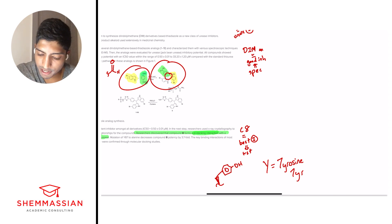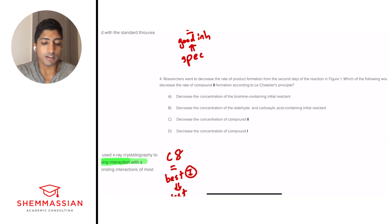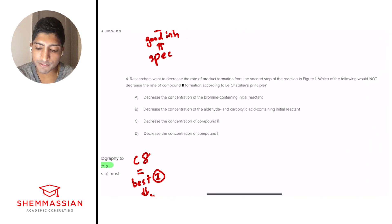With that, we're on to our final question. Researchers want to decrease the rate of production formation from the second step of the reaction in figure one. Which of the following would not decrease the rate of compound 2 formation, according to Le Chatelier's principle. Is it A, decrease the concentration of the bromine containing initial reactant? Is it B, decrease the concentration of the aldehyde and carboxylic acid containing initial reactant? Is it C, decrease the concentration of compound 2? D, decrease the concentration of compound 1?